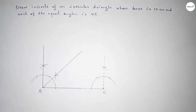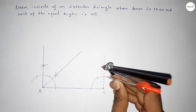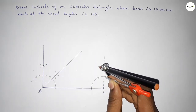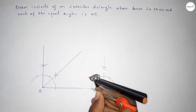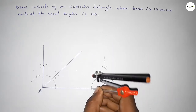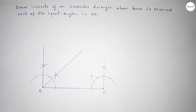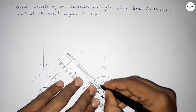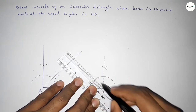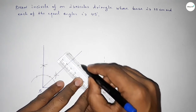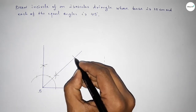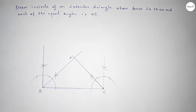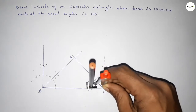With the same length putting the compass here and drawing an arc, then with the same length putting the compass here and cutting here. Now joining this line to get the 45 degree angle. Both lines intersect at a point — taking this as point A.